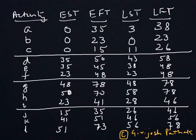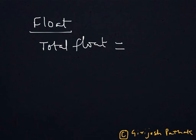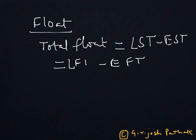This is called float or total float. Total float for an activity can be computed either by taking LST (latest start time) minus EST (earliest start time), or by subtracting earliest finish time from latest finish time. This gives us the extra time available for that activity.